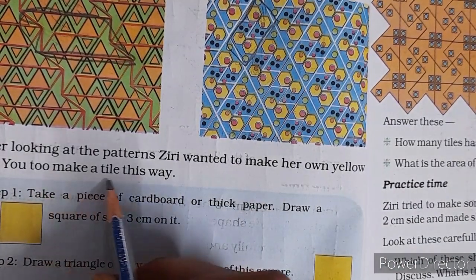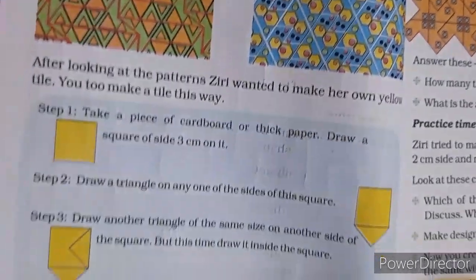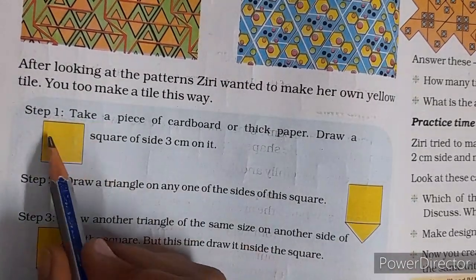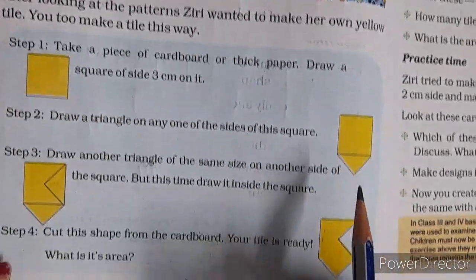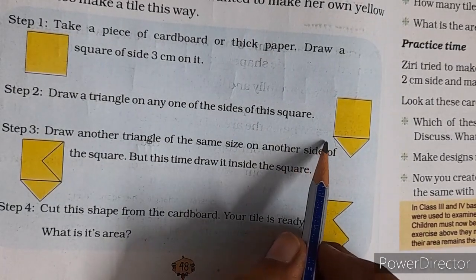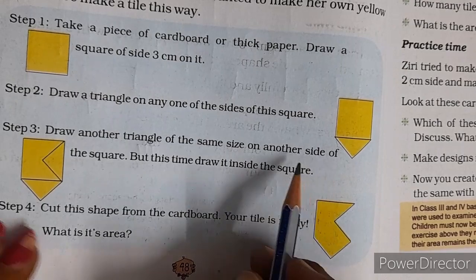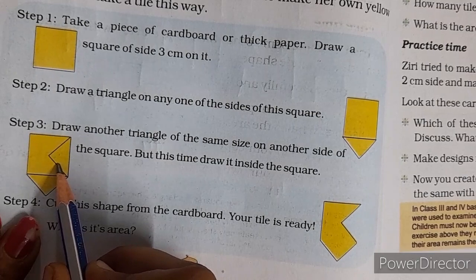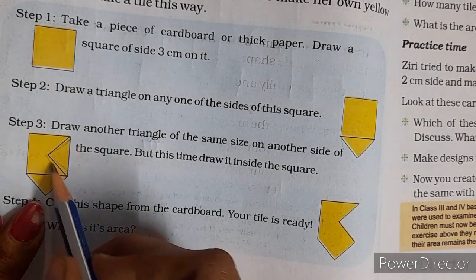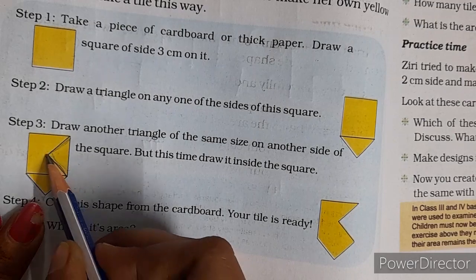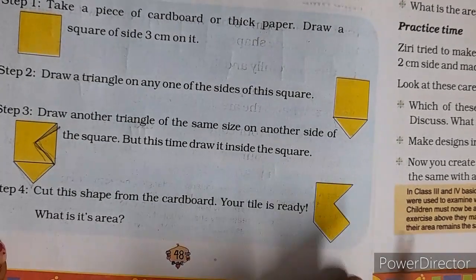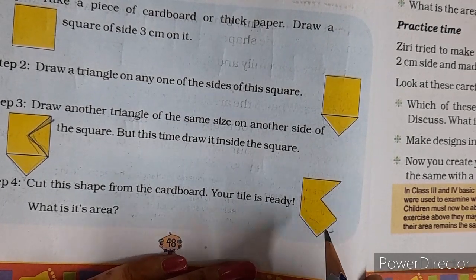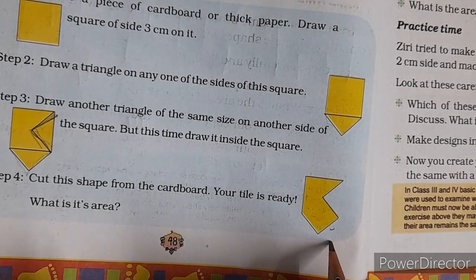After looking at the pattern, Ziri wanted to make her own yellow tile. You too can make a tile with this way. She took a paper 3 centimeter. Then she placed a triangle on one side, made a triangle on the second side, then cut it from here. She kept it same as it is and cut it from here.